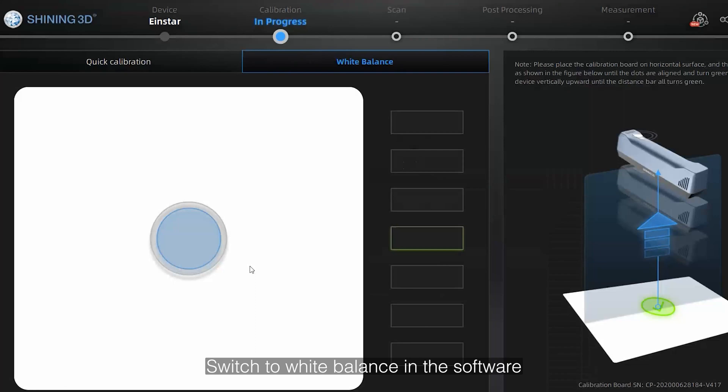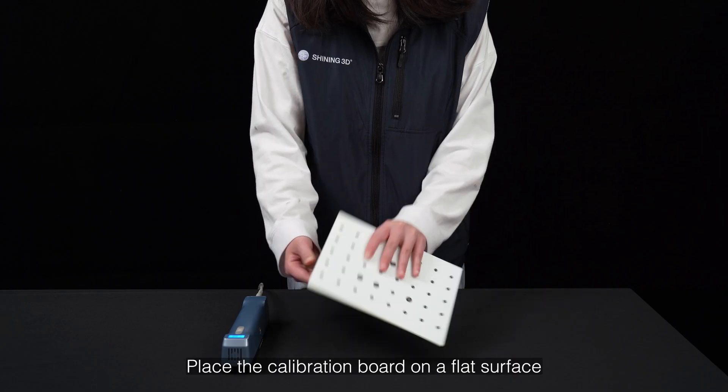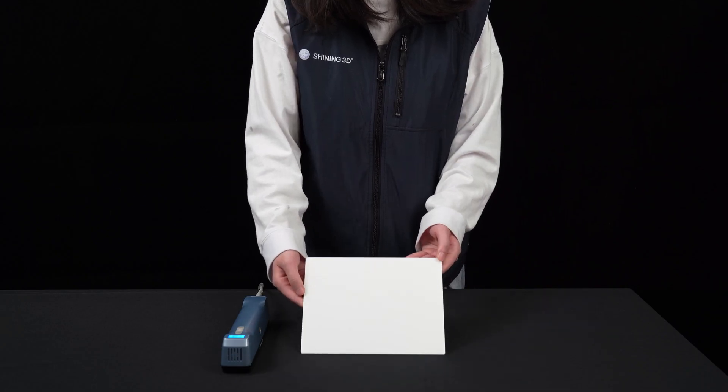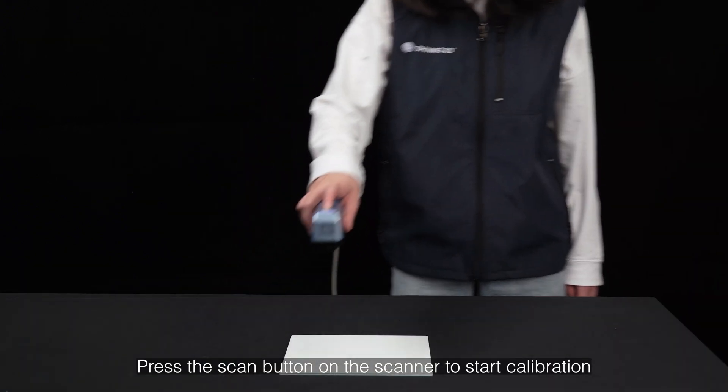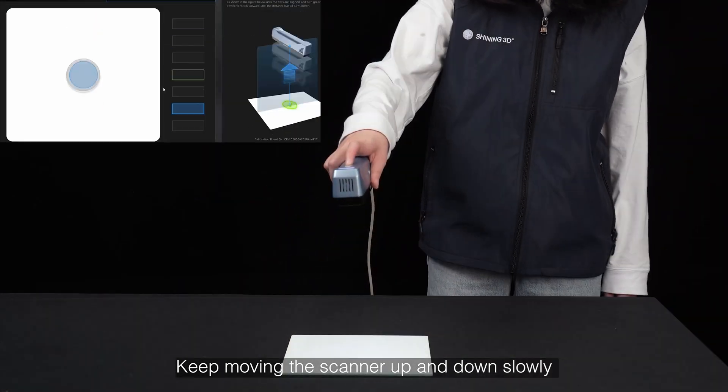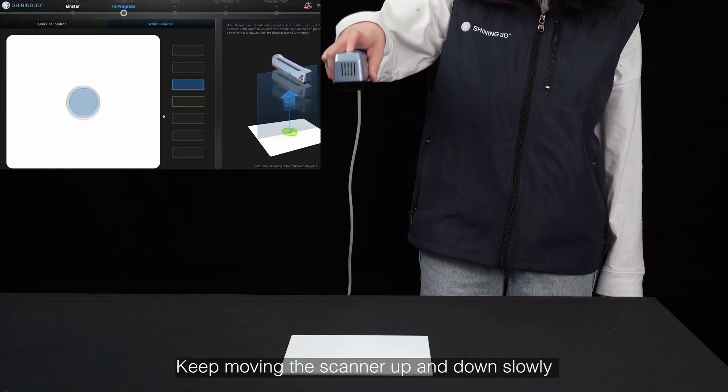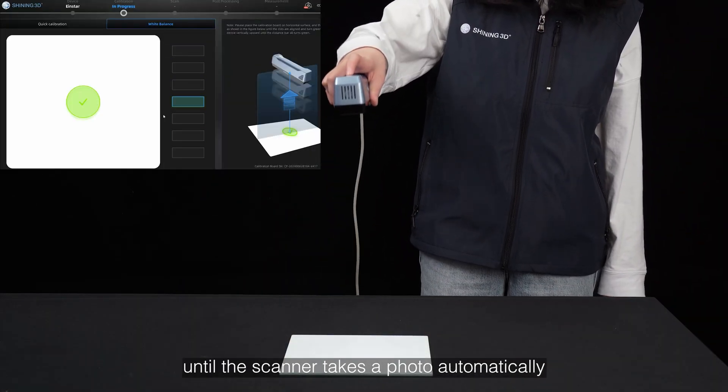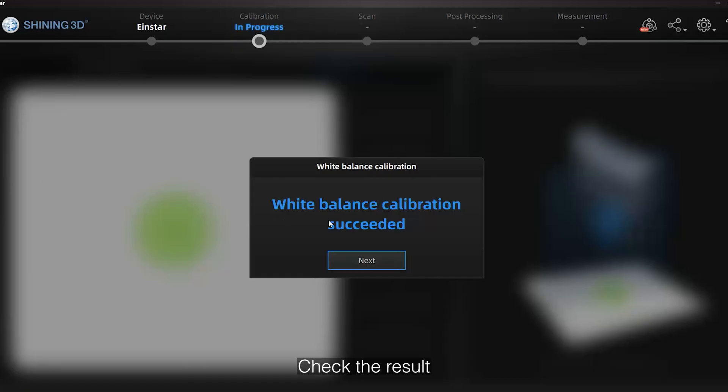Switch to white balance in the software. Place the calibration board on a flat surface and press the scan button on the scanner to start calibration. Keep moving the scanner up and down slowly until the scanner takes a photo automatically. Check the result.